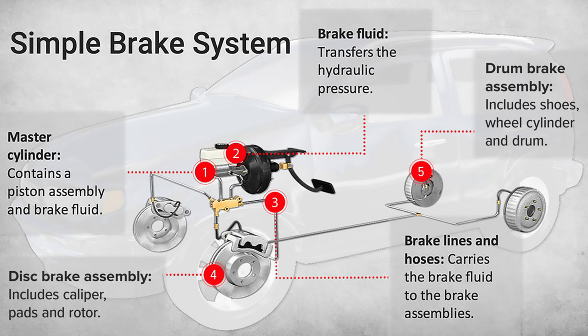The primary difference between disc brakes and drum brakes is relatively simple. Disc brakes create friction with a disc-shaped rotor and a pair of brake pads, whereas drum brakes use a circular drum and brake shoes. Of course there is a bit more to it than that — each drum or disc brake assembly contains a unique collection of parts that work together to stop the vehicle.